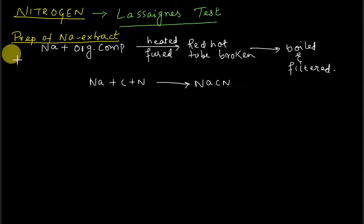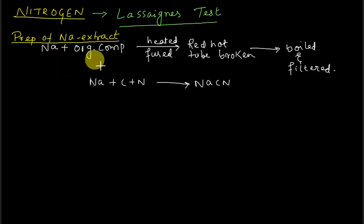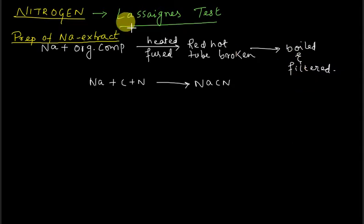Next is detecting nitrogen. There are various tests like ignition test and soda lime test, but the most important is Lassaigne's test. First, we prepare a sodium extract of the organic compound: add a pinch of sodium metal and organic compound in a test tube, fuse (melt) it, then break the red-hot tube into pieces, boil and filter to get the sodium extract. The assumed reaction gives NaCN.